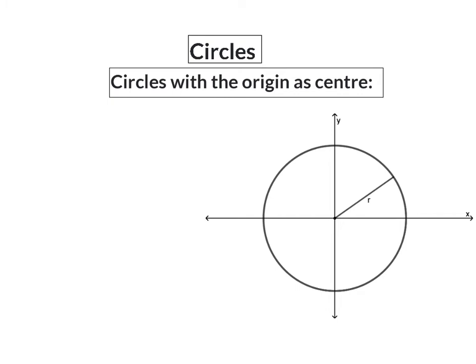A circle, just like any other graph, has a standard form or standard equation. A circle with the origin as center has a standard form of x squared plus y squared equals r squared. In this equation, r is the radius of the circle, and the radius is always drawn to any point on the circumference of the circle, and any point has a coordinate x and y.